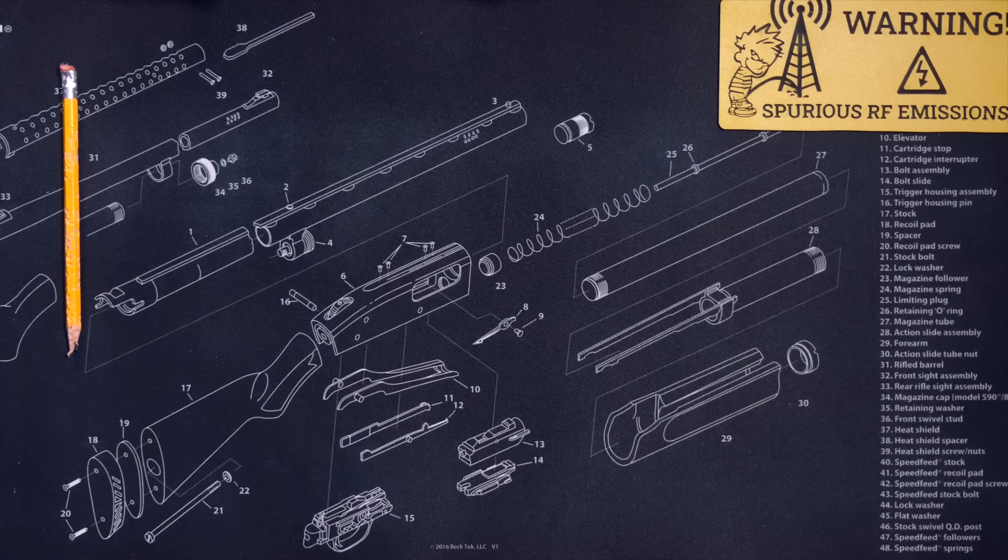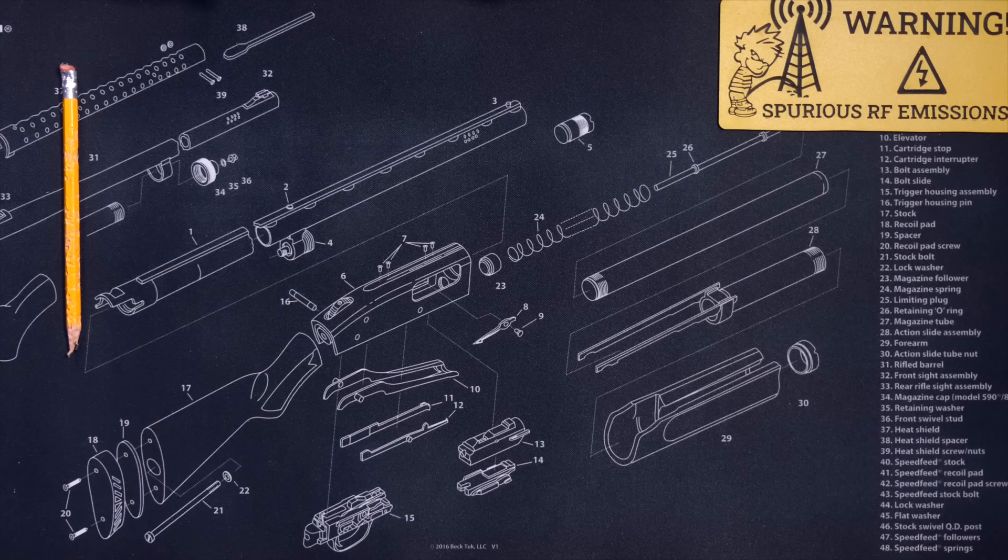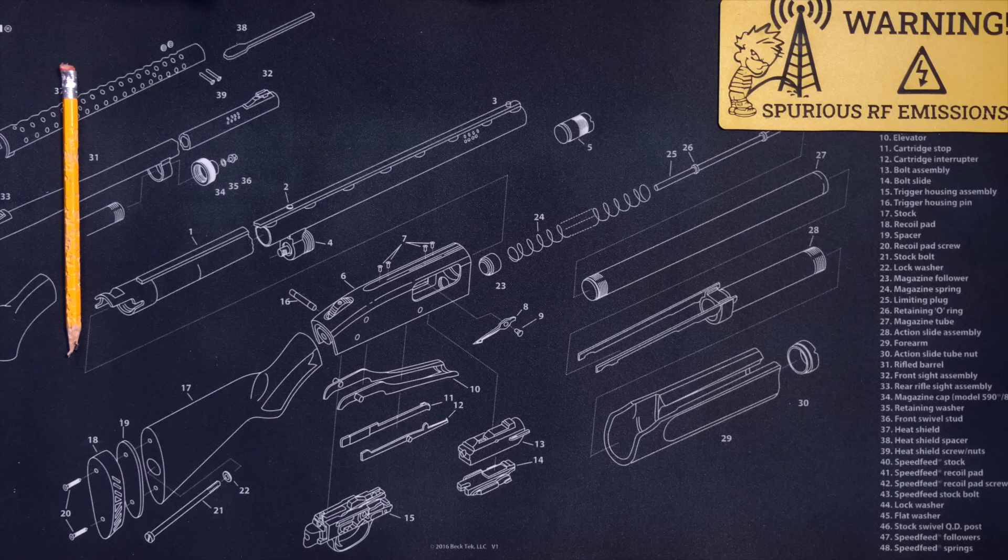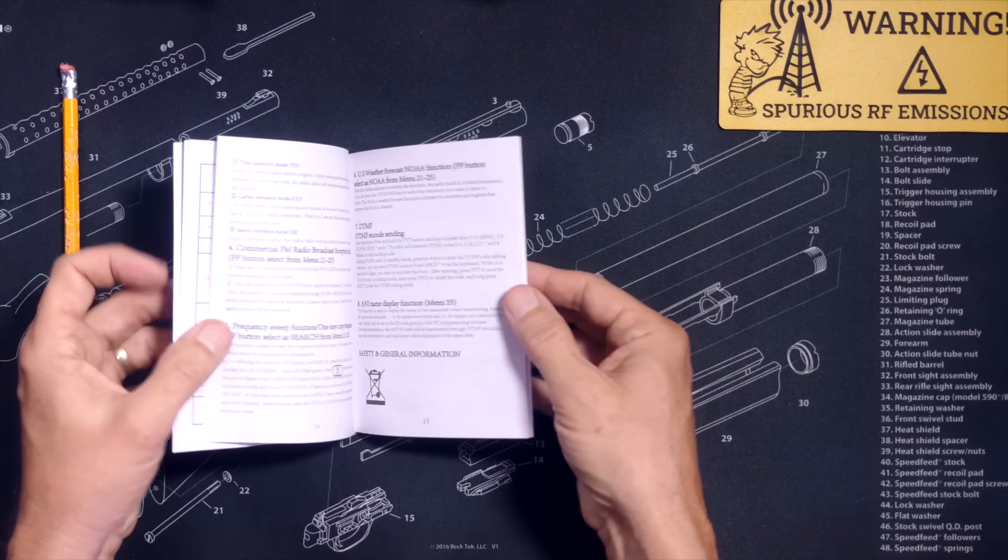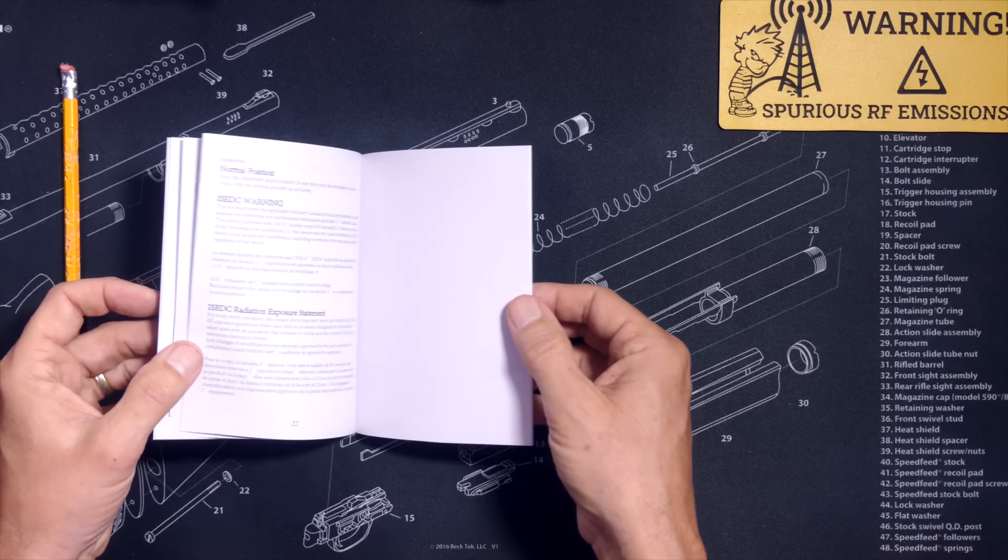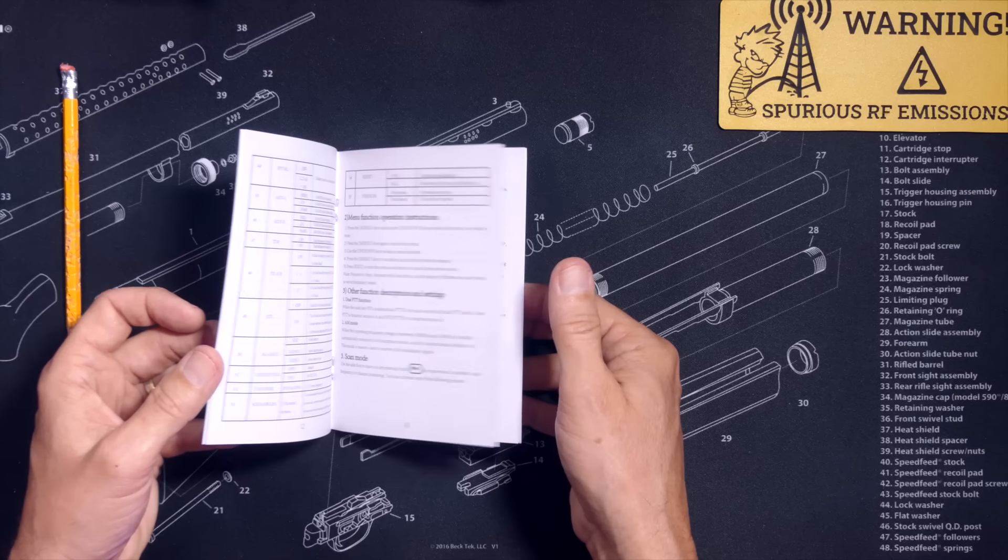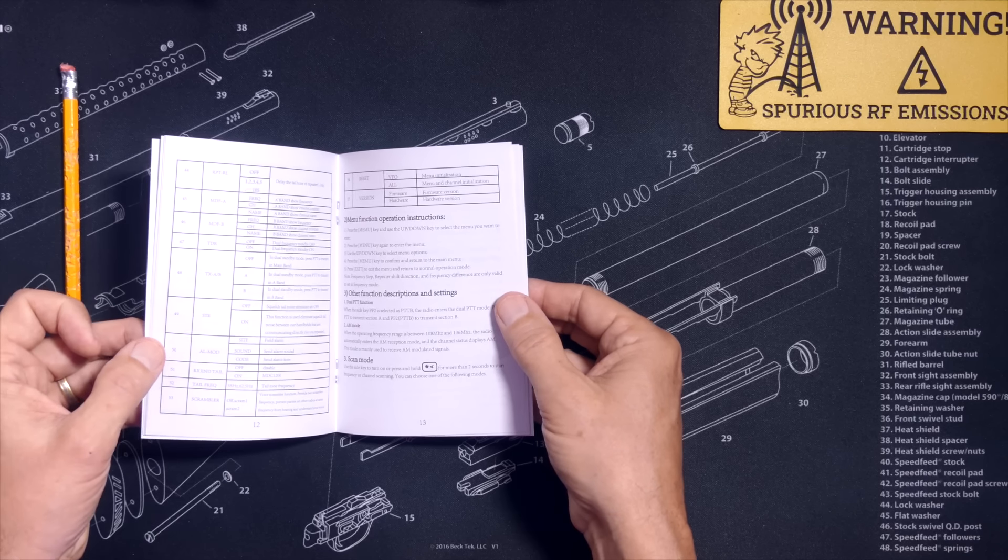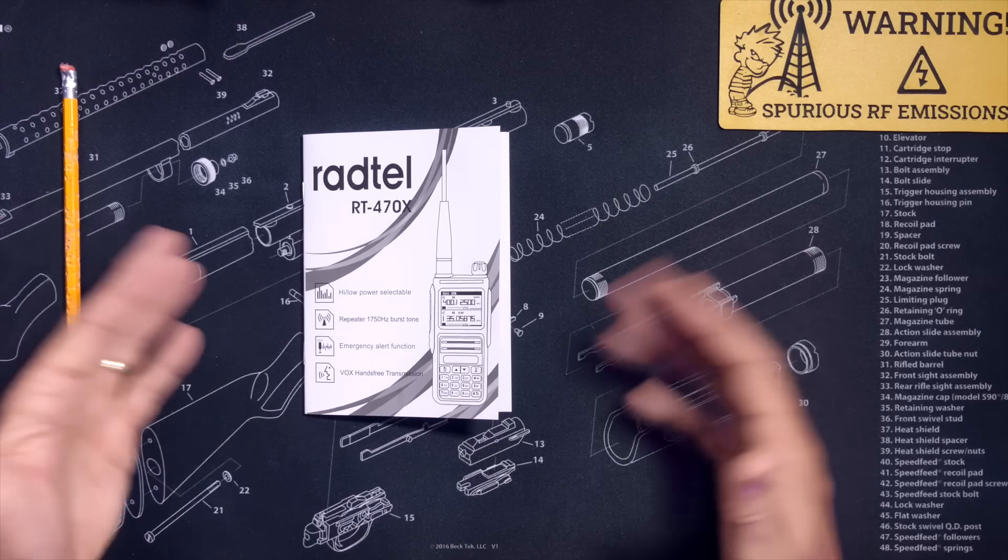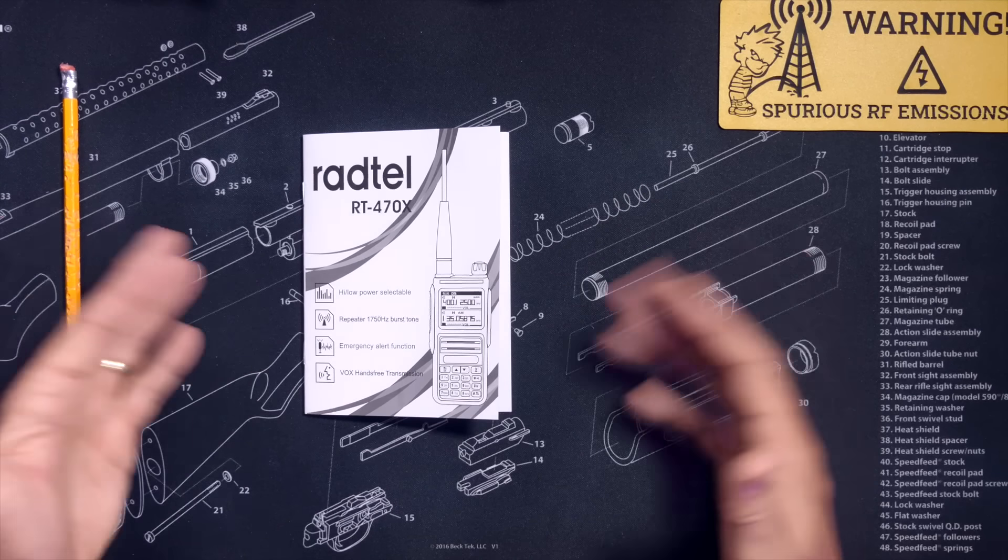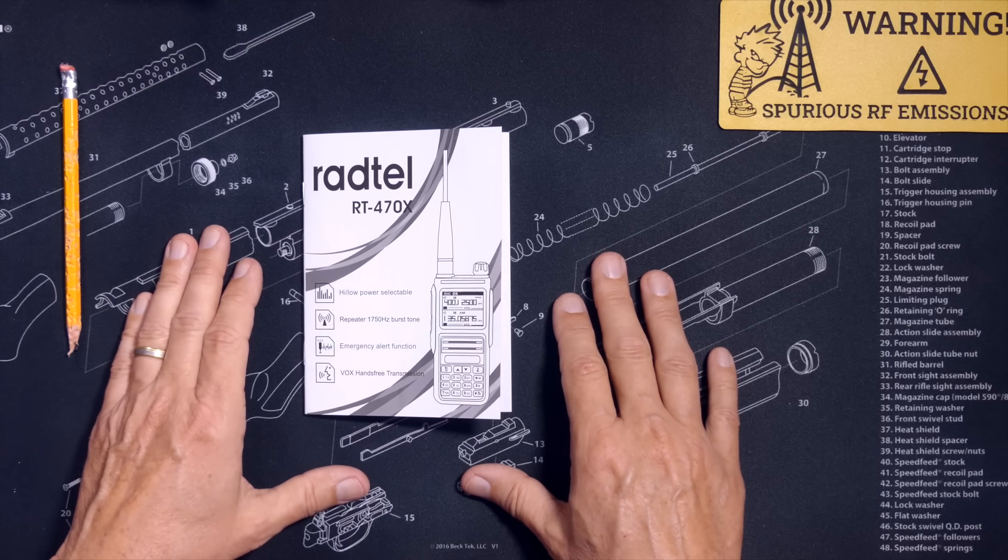So when you purchase the Radtel RT470X Walkie Talkie Ham Radio, in the box you will receive a user manual, 22 pages long. However, pages 15 through 22 are nothing more than FCC warnings and safety compliance stuff that nobody ever reads. The manual is written in average Chinglish and also has a few typos. However, using this manual, I was able to figure out how to use the radio and how the radio works. And according to some people, I am stupid, so if I can figure it out, I'm sure that you can too.